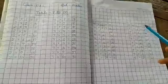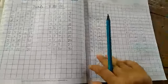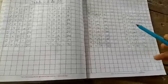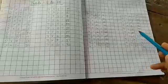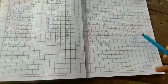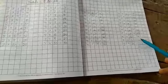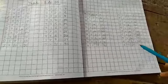5 1's are 5, 5 2's are 10, 5 3's are 15, 5 4's are 20, 5 5's are 25, 5 6's are 30, 5 7's are 35, 5 8's are 40, 5 9's are 45, 5 10's are 50.